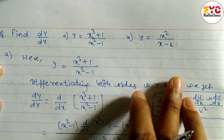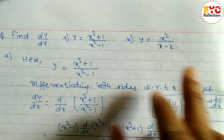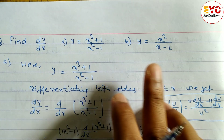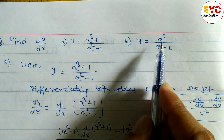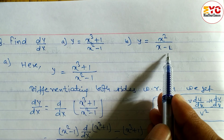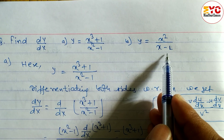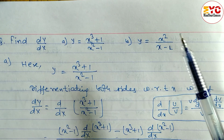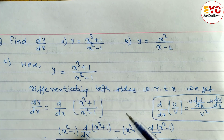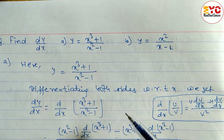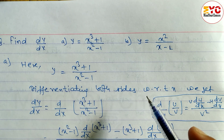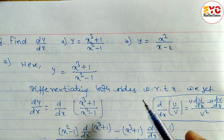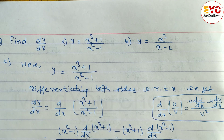That is the answer for question number a. For question number b, y equals x² divided by (x - 1), where u = x² and v = x - 1. Please solve it yourself and comment the answer. If you understand, please hit the like button, please subscribe, and do not forget to share with your friends. Thanks for watching till the last. Keep supporting and keep sharing.